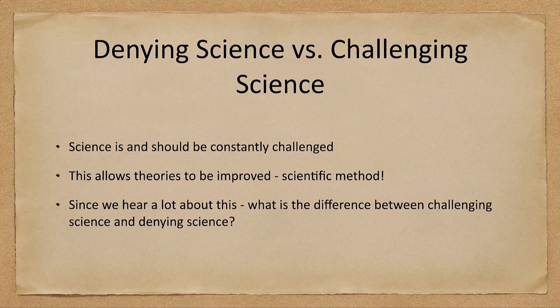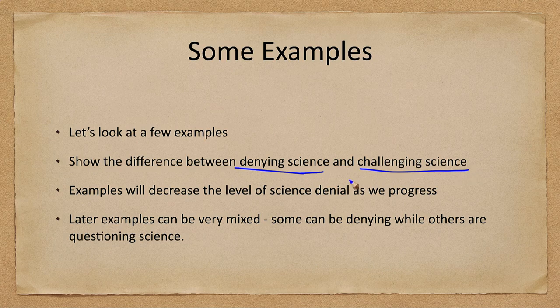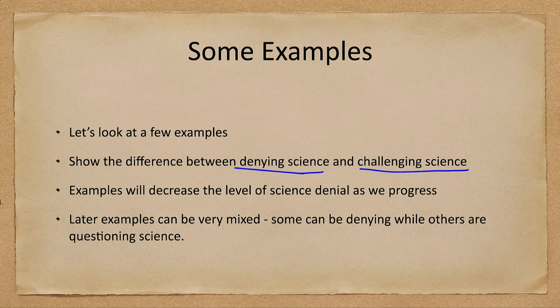We're going to look at a couple of examples to get an idea of what we mean by denying science versus challenging science. You can have both in any of these examples. I tend to look at it as the examples will decrease in the level of science denial. The first example is pretty much denying science, while the later examples could be more of a mix of the two, where there could be some good reasons to challenge things as well.